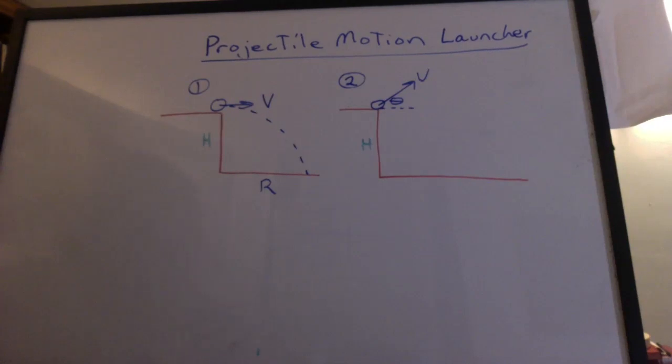Then in part two, launch it maybe from the same height at an angle. It'll be the same velocity that the launcher shoots at. Then you can predict the range, shoot it, and see if you get there.